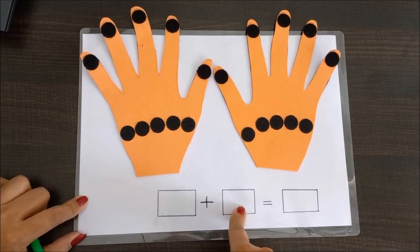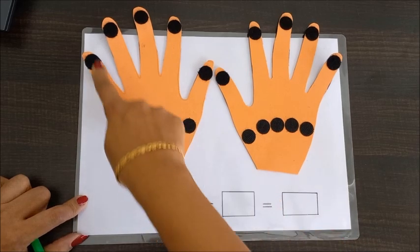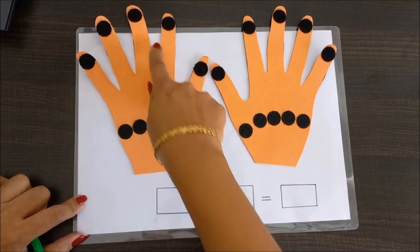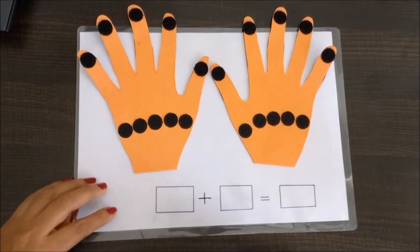So you can see this foam kind of sheet where there are five fingers and the velcro is attached to them. For example, we want the child to do the addition of three plus three.